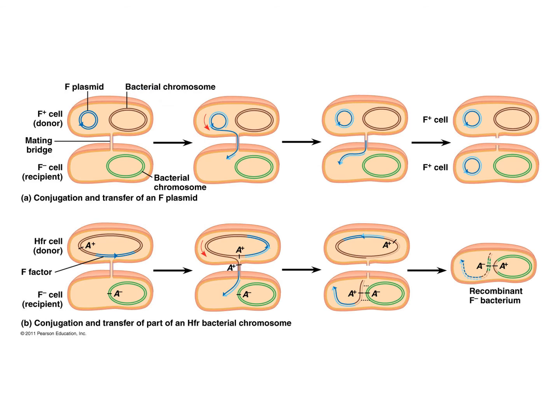A third virus-like element seen in bacteria is plasmids — circular DNA molecules that can move from cell to cell when two bacteria conjugate, or when a bacterium dies and the plasmid is released into the environment, where other bacteria can pick it up and integrate it into their genome. These weird, movable genetic elements may represent what a precursor to a virus might have been like.